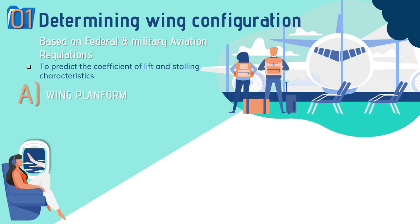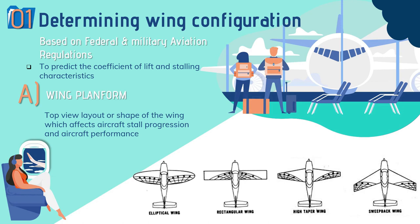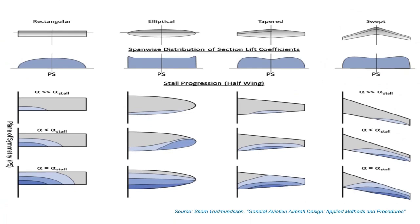Starting with the selection of wing platform, it is a top-viewed layout or the shape of a wing which influences the aerodynamic characteristics like stall progression and performance of the aircraft.